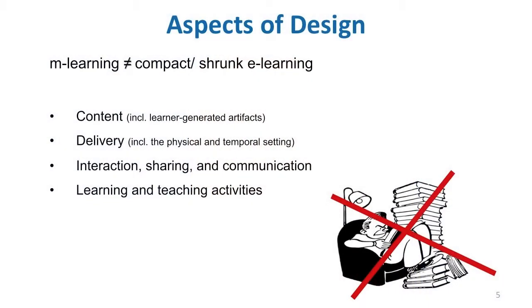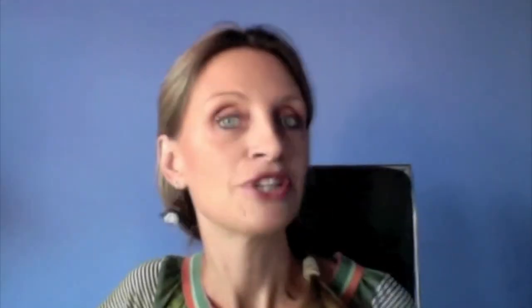When designing for mobile learning, keep it in mind and also look very carefully at these four aspects of the design for mobile learning: the content, the delivery methods and tools, interaction sharing and communication methods, as well as the design of learning and teaching activities.